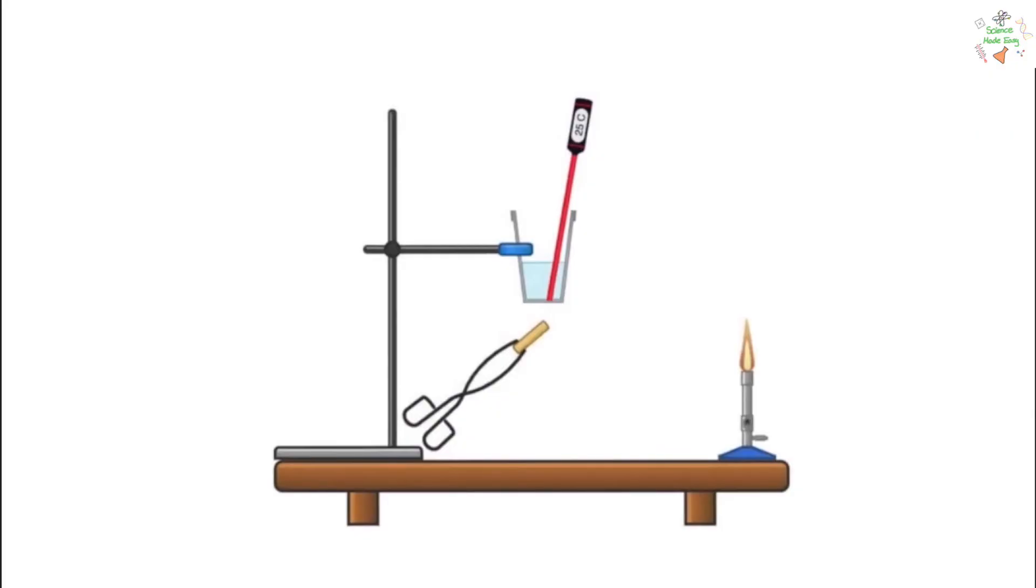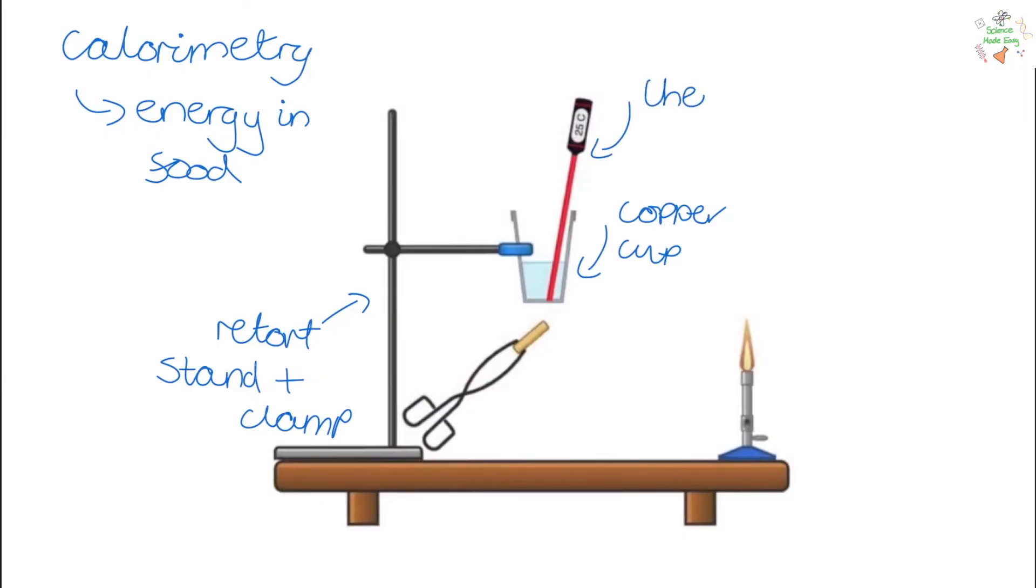To find how much energy food has, we can do a process called calorimetry. To carry out a calorimetry experiment, we need a retort stand with clamp, a copper cup, a thermometer, tongs, and a Bunsen burner. Set the food alight using the Bunsen burner and then hold it underneath the copper cup. The heat from the food will be transferred to the water inside the copper cup. And then we can use the thermometer to track the temperature change from before the experiment and after.